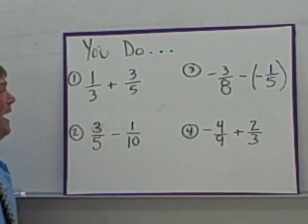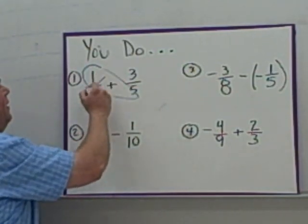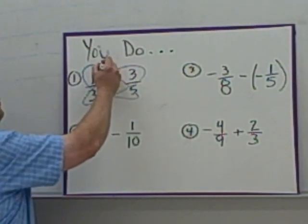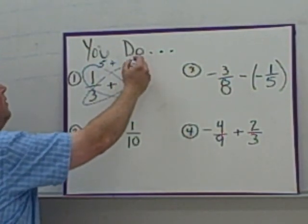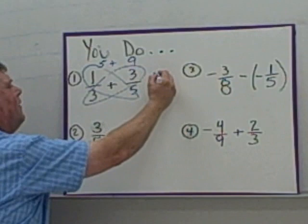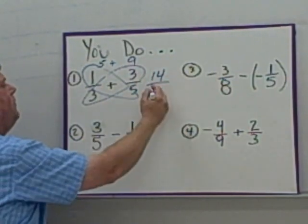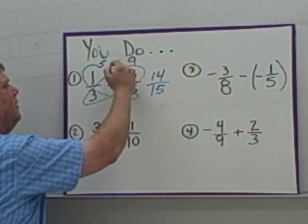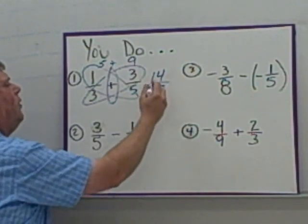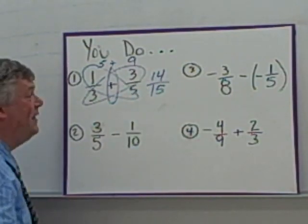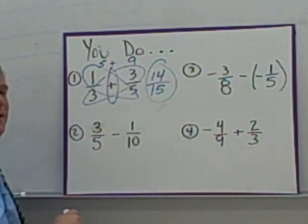Alright, welcome back. Here we go. So, butterfly, 5 × 1 = 5, plus 3 × 3 = 9. I get 14. 3 × 5 = 15. So I get 14/15. That can't be reduced. That's my answer.